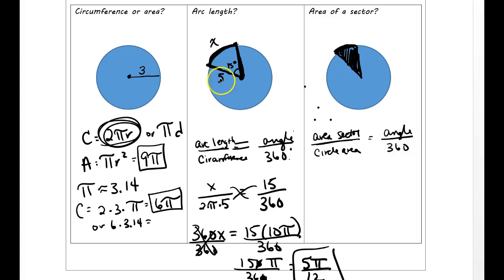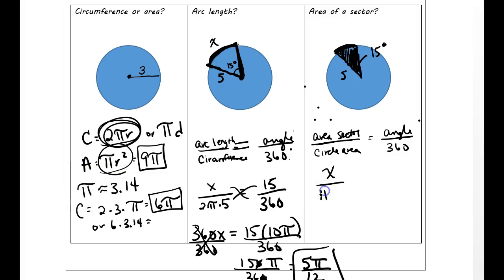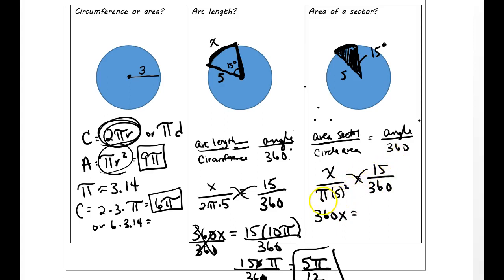Let's use the same values: radius is 5 and the angle is 15 degrees. If somebody asks for the area of the sector, we call it x. On the bottom we need the area of the whole circle, which is πr², so π times 5 squared, equals 15 over 360. Cross multiplying: 360x equals 25π times 15.